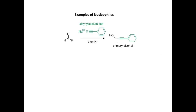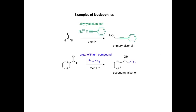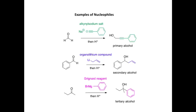We now change our organometallic to an organolithium compound — here we have allyllithium. Similarly, we can react the allyllithium with, in this case, benzaldehyde. We get nucleophilic addition to the carbonyl group and after protonation we form a secondary alcohol. And finally we can use a Grignard reagent. Here we have phenylmagnesium bromide reacting with a ketone. After protonation we form a tertiary alcohol, and there's the new carbon-carbon bond that we formed.